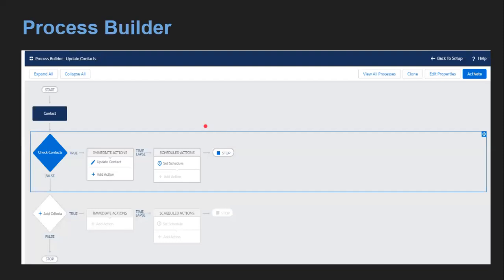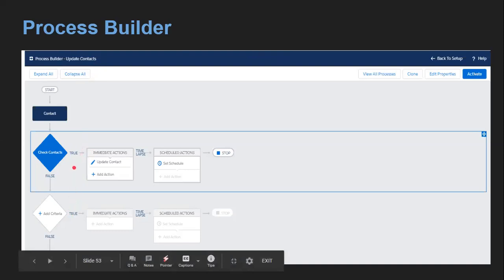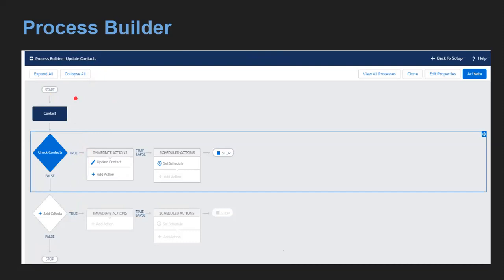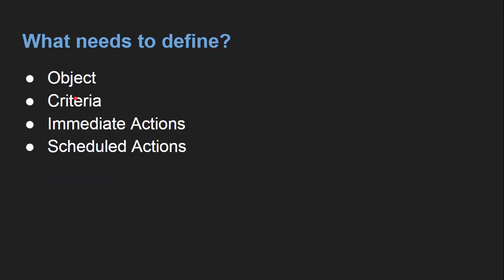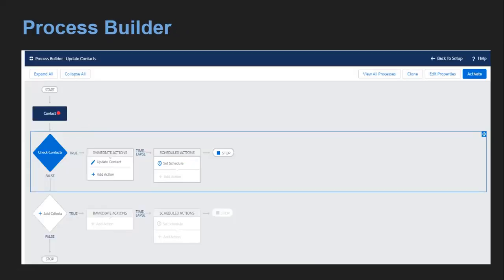This is a pictorial representation of Process Builder. When implementing any process, you will see this kind of UI. At the top right corner, buttons are available: View All Processes, Clone, Edit Properties, and Activate. At the top left corner, you can see the name of the process, and two buttons — Expand All and Collapse All. You need to select a particular object on which you can fire this Process Builder.